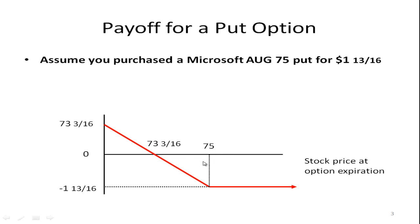When the price falls below $75 a share, you're able to sell at the higher exercise price. If the price falls to $40, you can buy it at 40 and sell it at 75, making a profit. The breakeven point is 73 and 3/16ths — because you paid 1 and 13/16ths for this option, take 75 and subtract 1 and 13/16ths to get 73 and 3/16ths. Below that, you make money. The maximum profit is 73 and 3/16ths, which occurs if the price falls to zero: you theoretically buy at zero, sell at 75, minus the cost of the option.